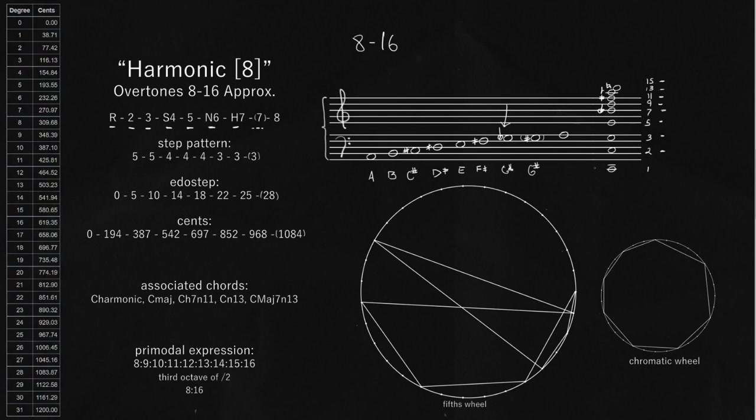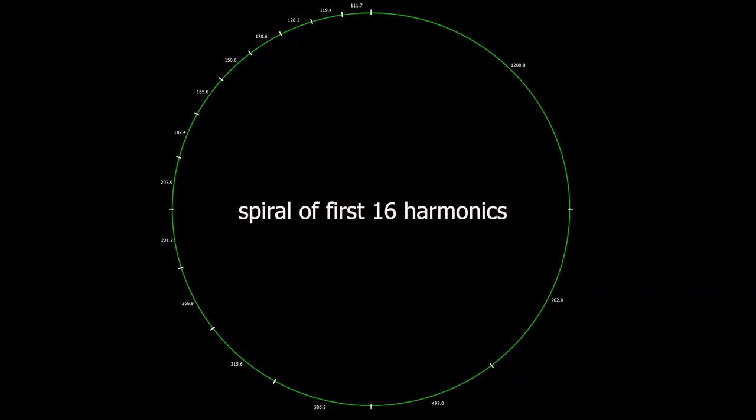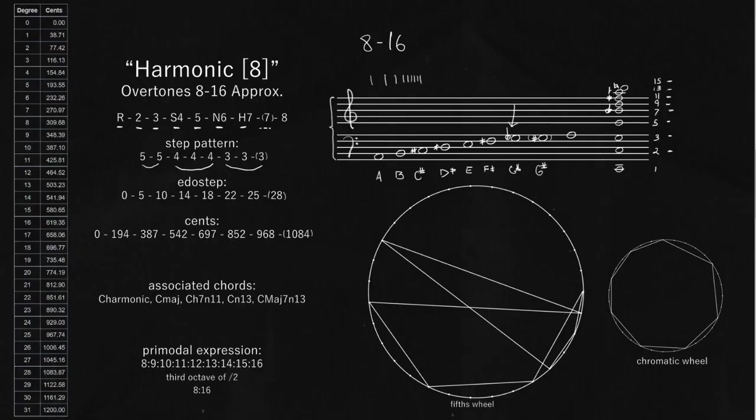The step pattern for this scale is really interesting. Because it is spacing around a harmonic approximation, the step sizes get incrementally smaller. So we start out with step sizes of 5, and then step sizes of 4, and then step sizes of 3 to close out the octave. This is very common of these harmonic structures because the harmonic series gradually gets smaller as you go higher and higher.